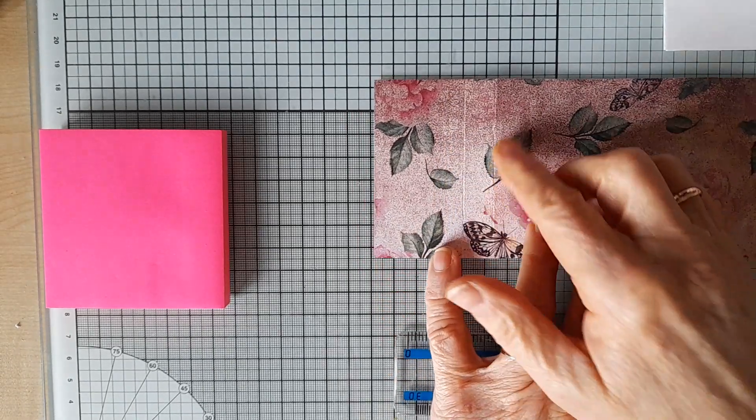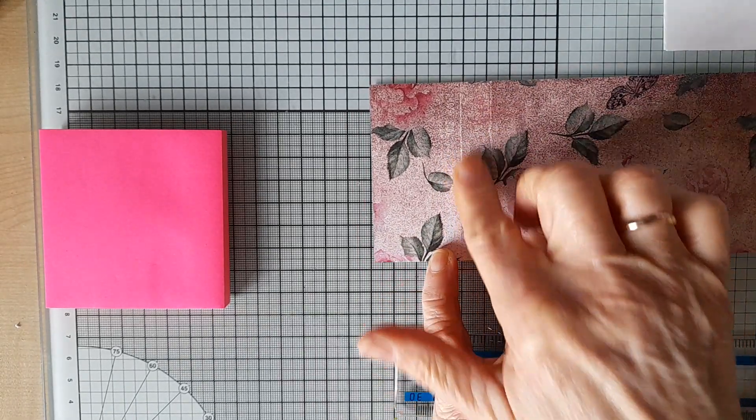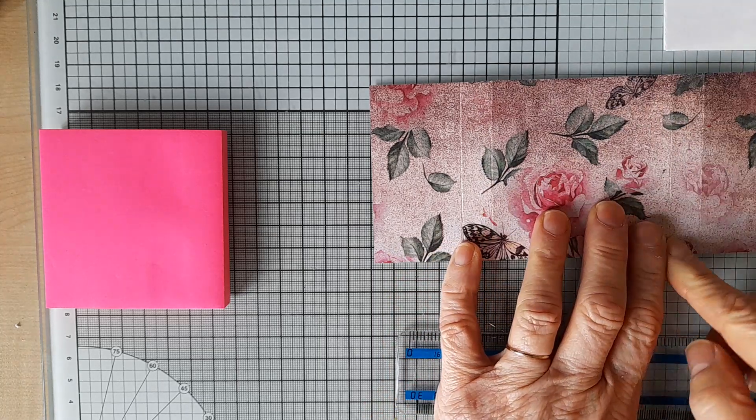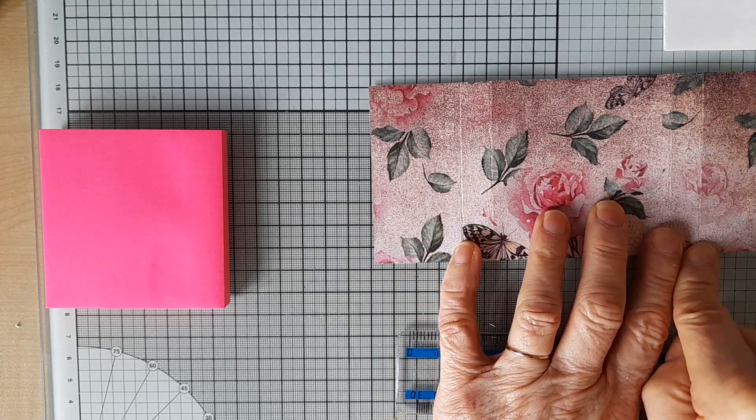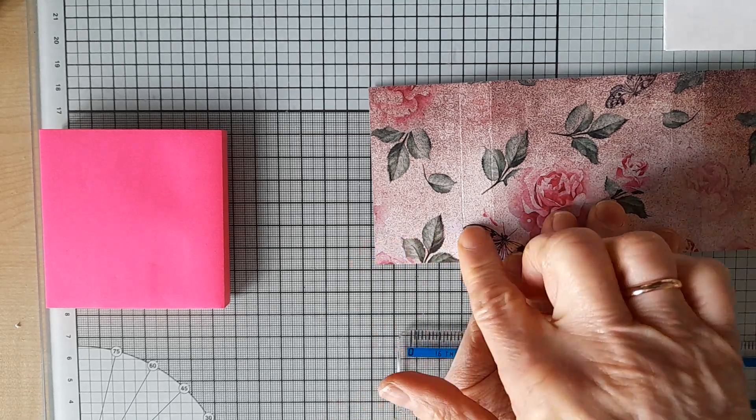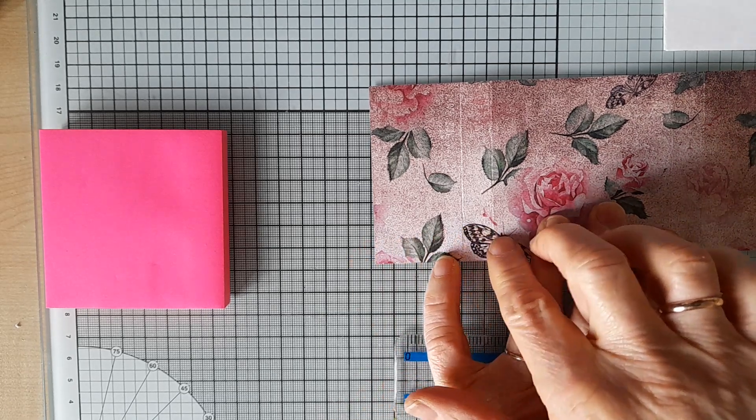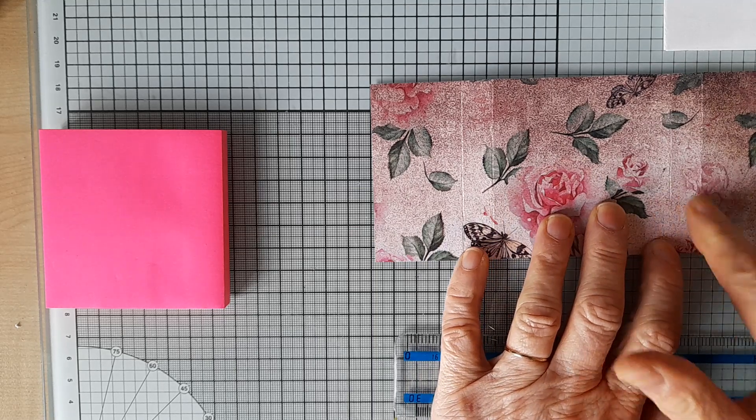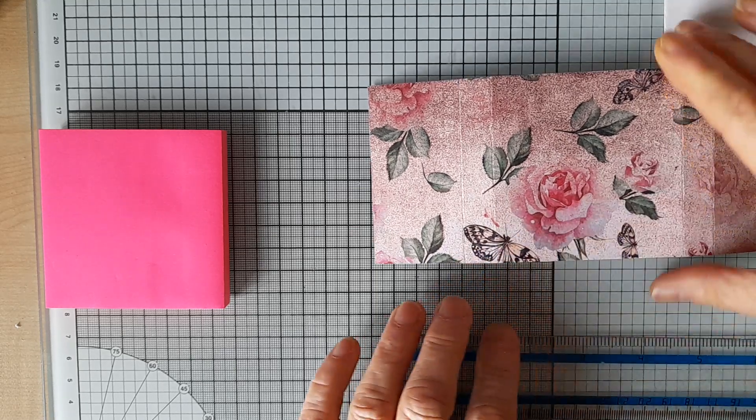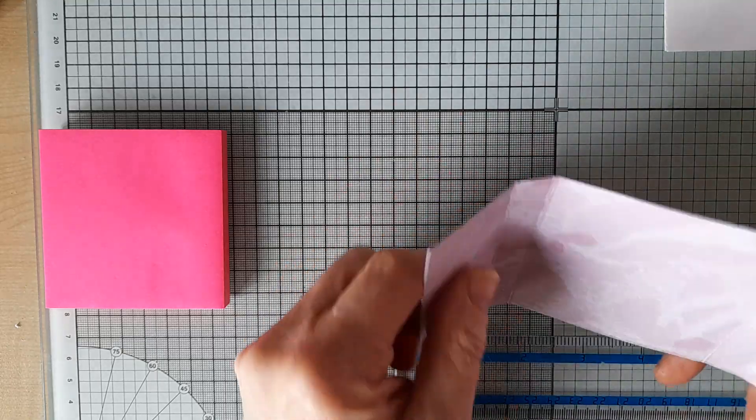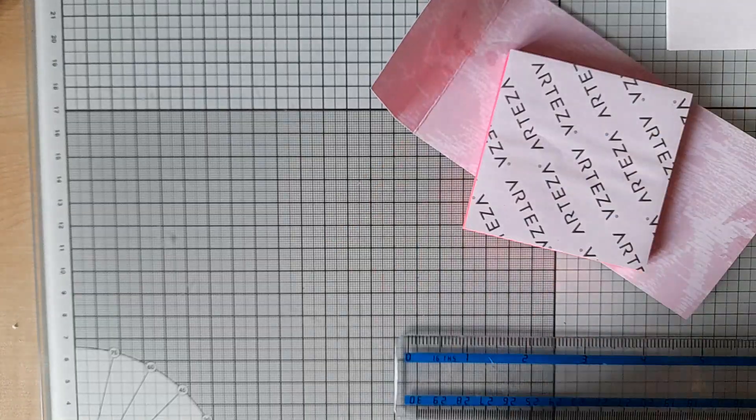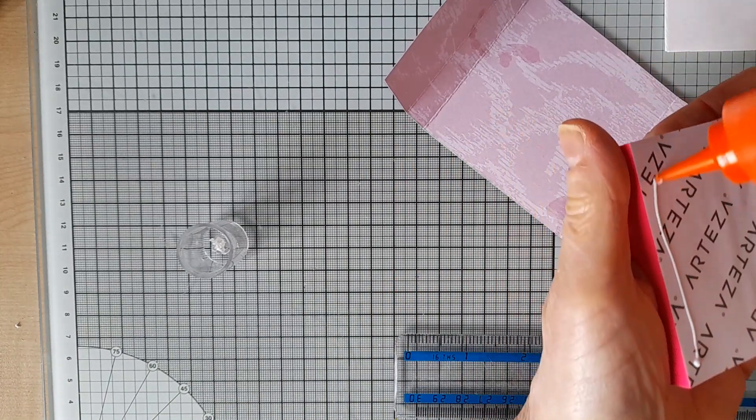This is what I've come up with, and then I need to score it at one and a half, two, five, and five and a half. So that's at one and a half plus a half is two, plus three is five, plus a half is five and a half. And that gives me the base for my book.